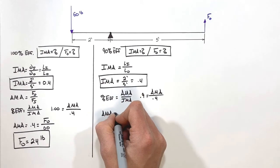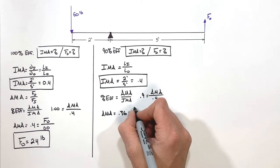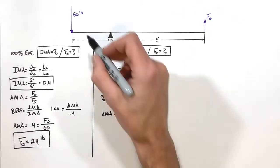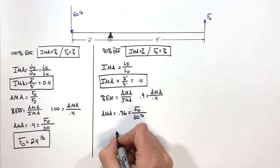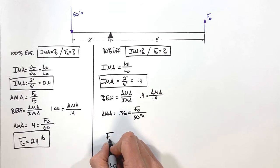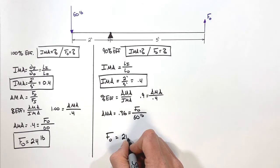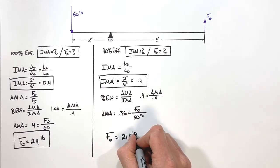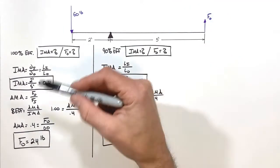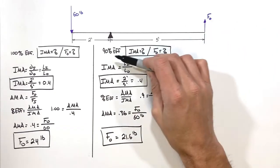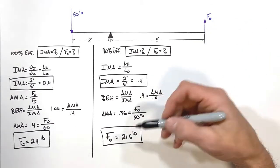So if this lever is only 90% efficient, we find that the actual mechanical advantage is 0.36. Since AMA equals F_out over F_in and the input force is 60 pounds, the output force is 21.6 pounds. In the situation where the lever was 100% efficient we got 24 pounds out; if it's less efficient we get less force out — only 21.6 pounds.